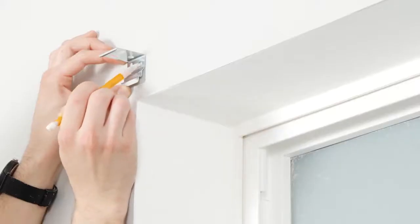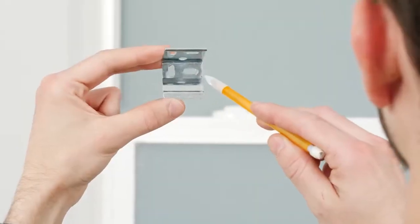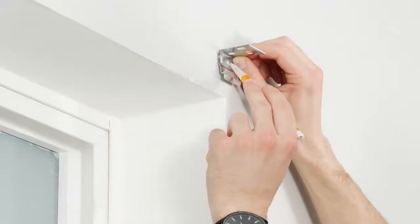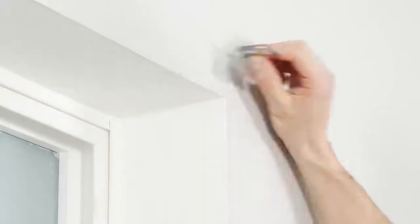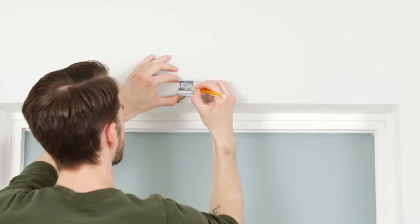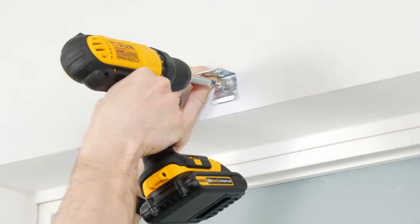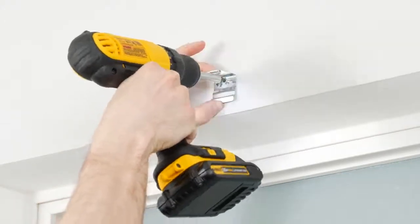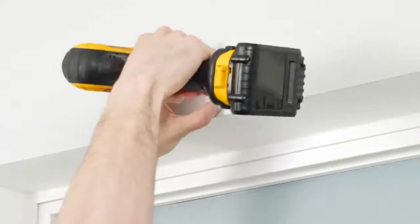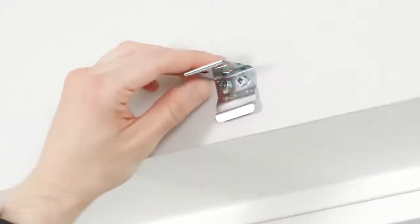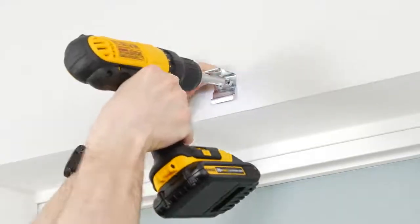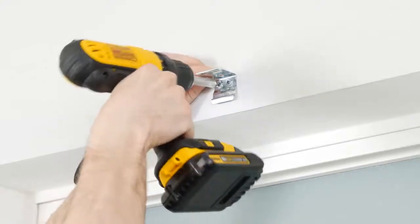Then, position a bracket just over the far left mark and use a pencil to mark where the screws will go. Repeat this for any remaining bracket locations. Before drilling in the screws, it's a good idea to pre-drill the holes to make it easier to put them in. Place the bracket over the holes and drill the screws in. You may want to screw them in loosely to allow for small adjustments. Once the brackets are lined up, finish drilling the screws in all the way.